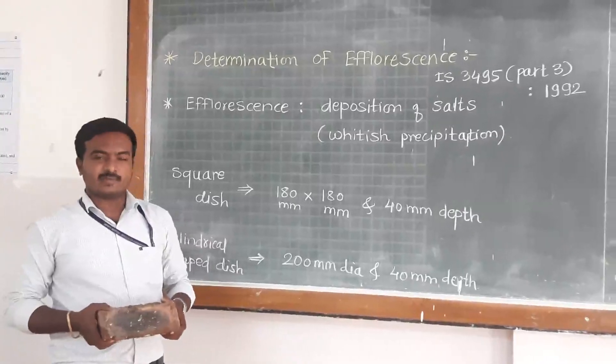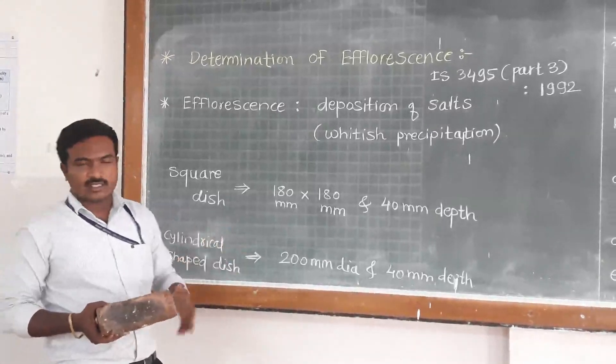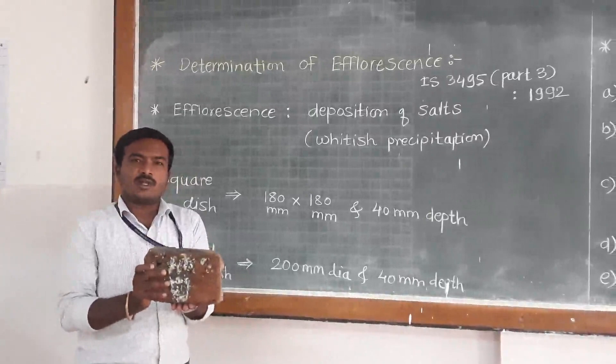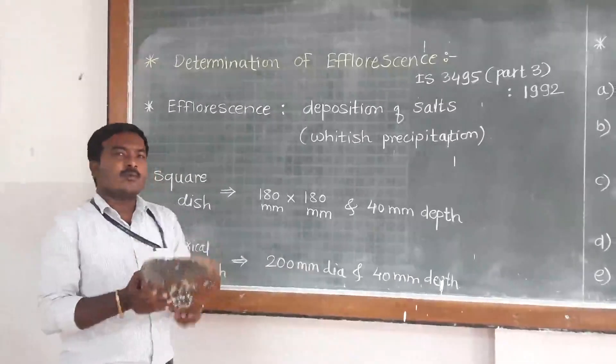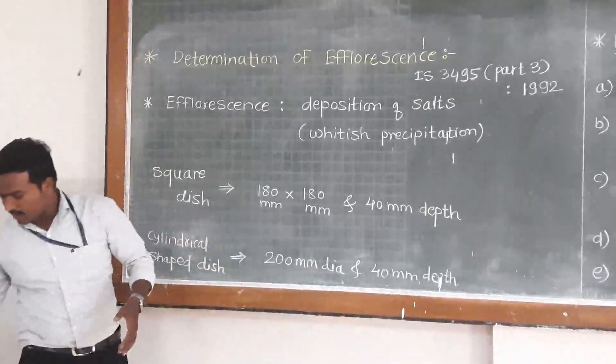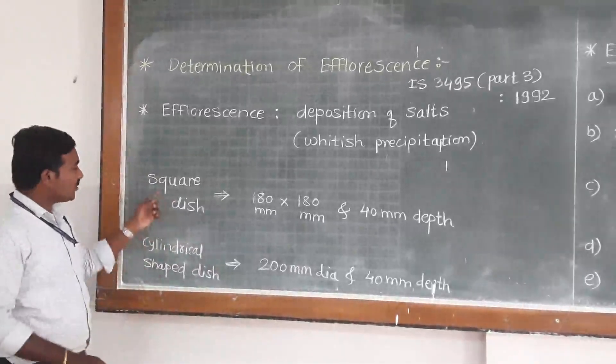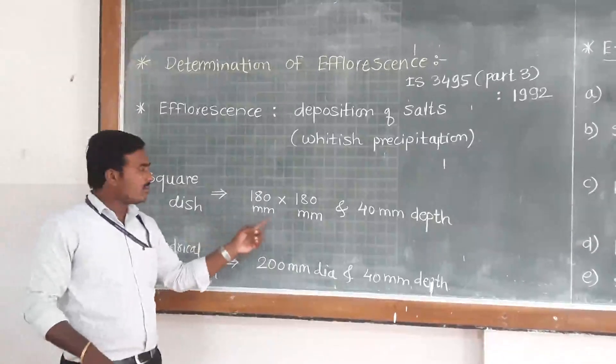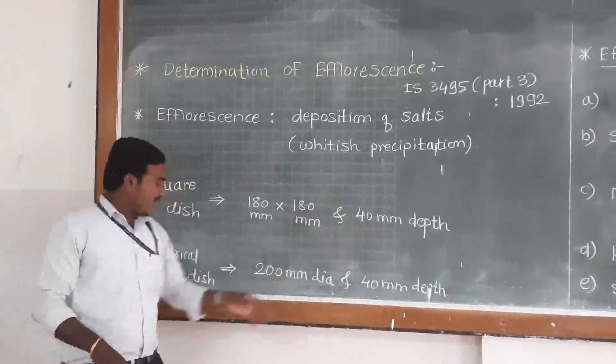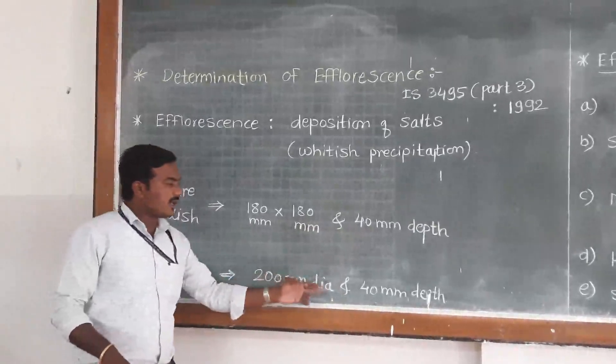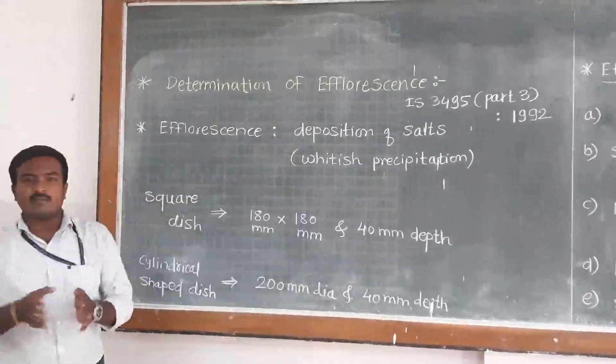To determine the efflorescence on brick, we have to submerge the brick in water. For that, we will use a square dish and a cylindrical shaped dish. For the square dish, dimensions are 180 mm by 180 mm and 40 mm in depth. For the cylindrical shaped dish, dimensions are 200 mm diameter and 40 mm in depth.